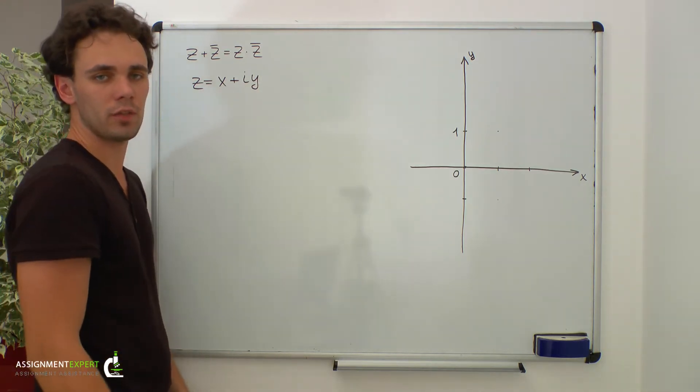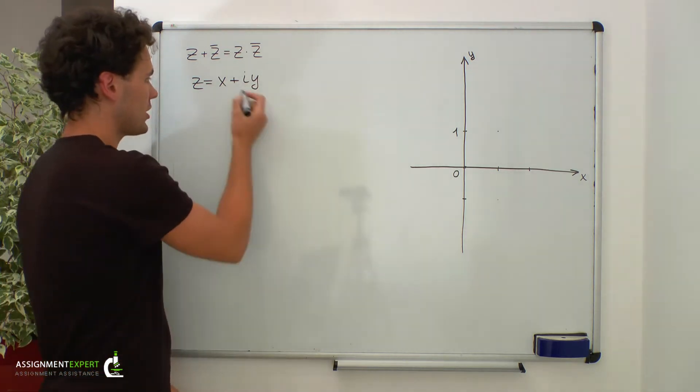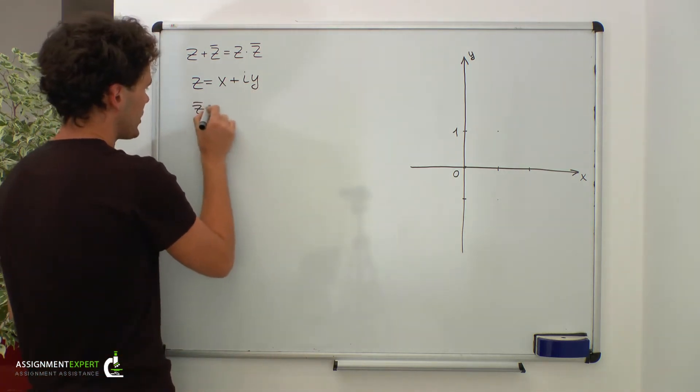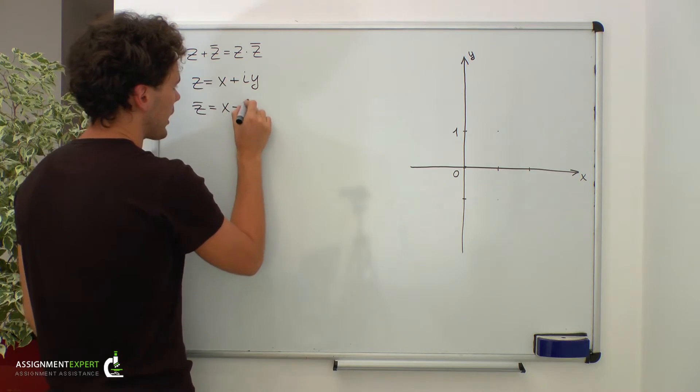To find the complex conjugate of a complex number, we need to change the sign in front of its imaginary part. So the complex conjugate to z equals x minus i times y.